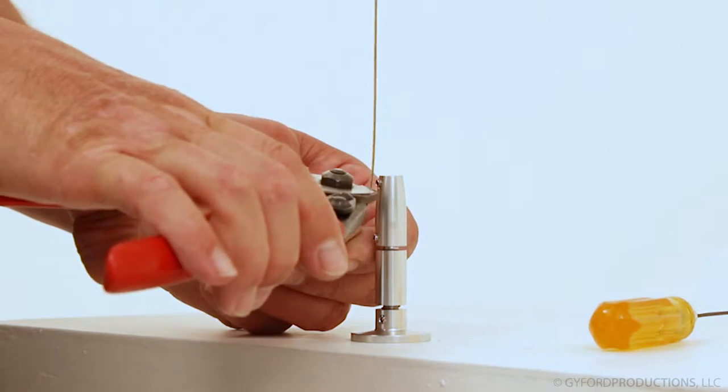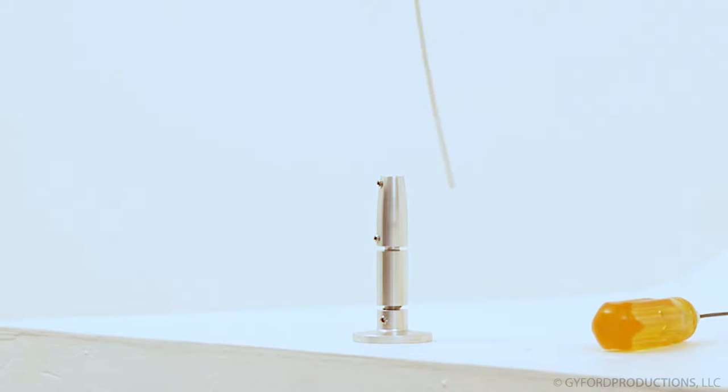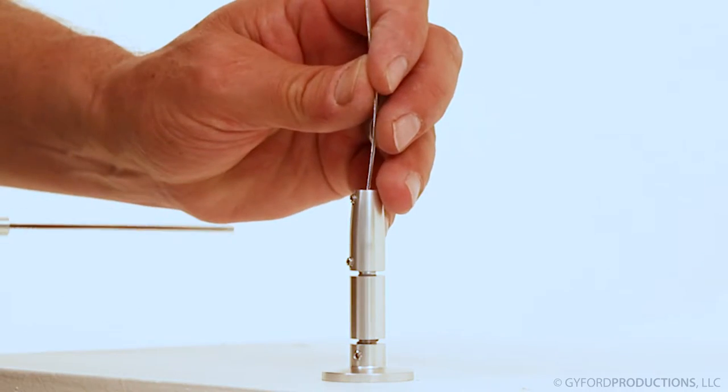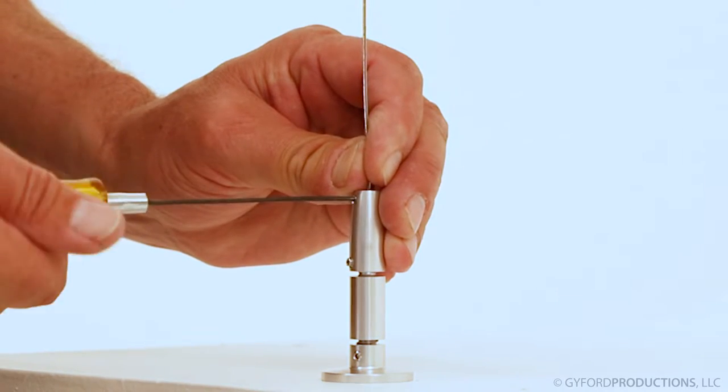Use a good pair of bypass cutters to snip the wire about 1⁄8 of an inch past the set screw. We have these available for sale if you need them. Insert the wire down into the housing and tighten the upper set screw firmly.